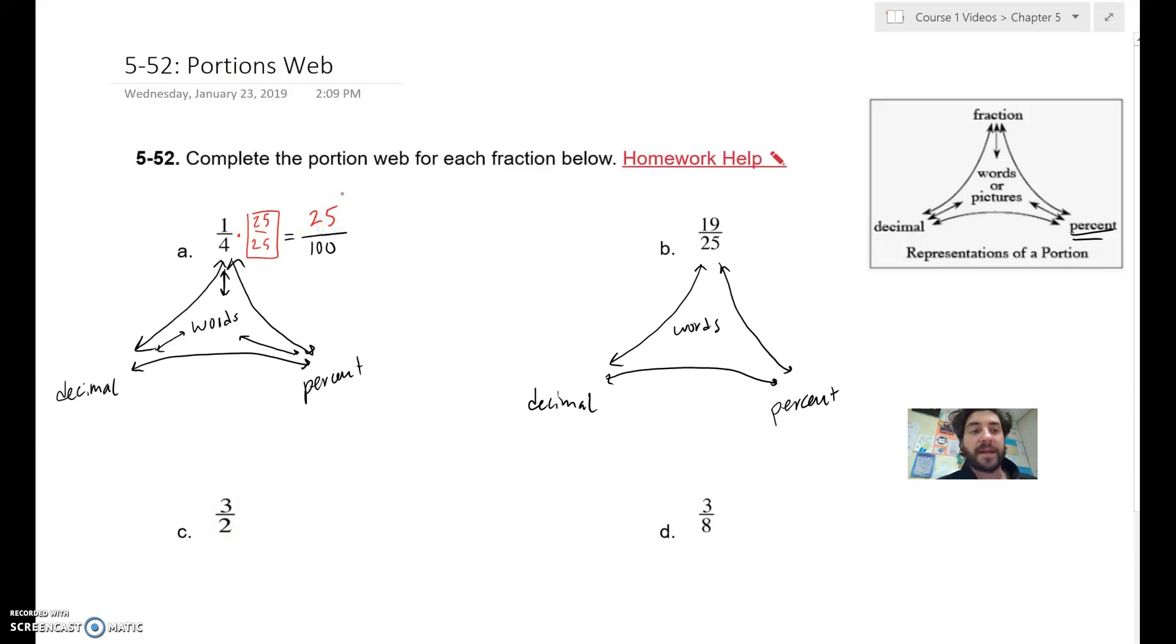So 1 times 25 is 25 hundredths. 25 hundredths. That's how I'm going to write it as a decimal, 25 hundredths. But we'll get to that in a minute. That's the words on the decimal.